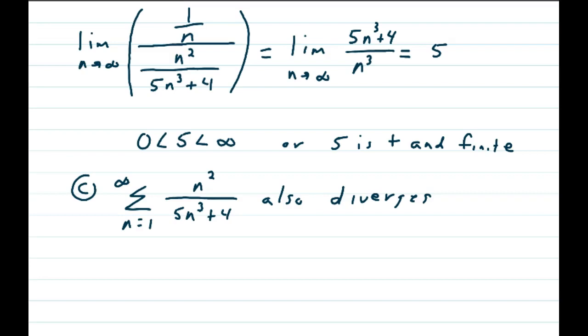Now we find the limit as n approaches infinity of 1 over n, our known p-series, over n squared over 5n cubed plus 4. We do the flip-flop of the fractions. We have the limit as n approaches infinity of 5n cubed plus 4 over n cubed, which equals 5.